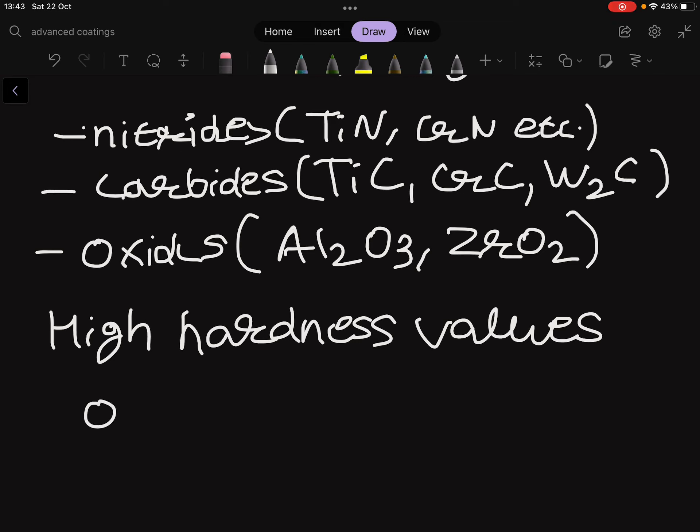So an alternative approach is to select materials intrinsically characterized by low friction, like molybdenum sulfide or diamond-like carbon, or diamond.